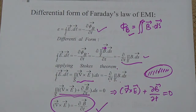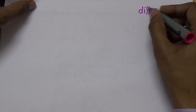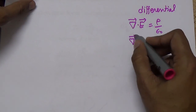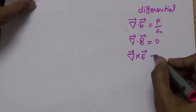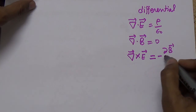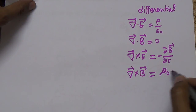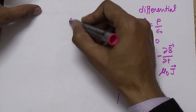We now have four equations in both differential and integral form, known as Maxwell's equations. The differential forms are: (1) del·E equals rho/epsilon-naught; (2) del·B equals zero; (3) del×E equals minus del B/del t (Faraday's law); (4) del×B equals mu-naught times J (Ampere's law), where J is the current density.